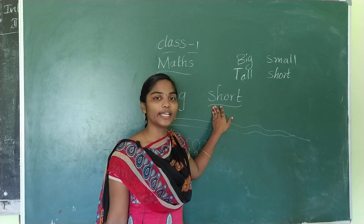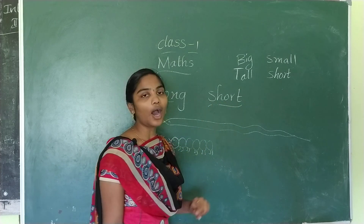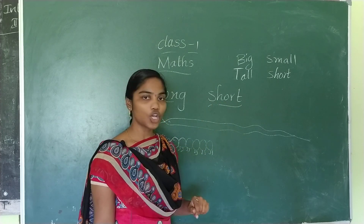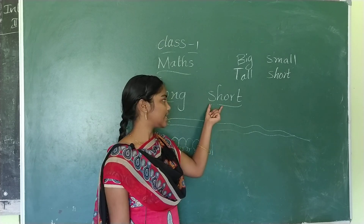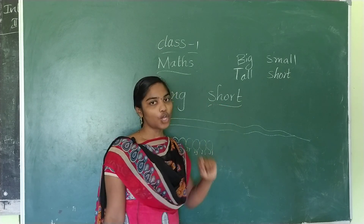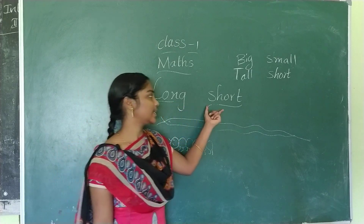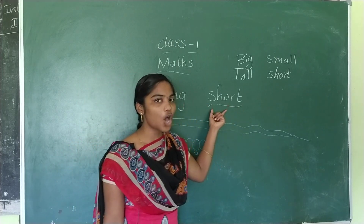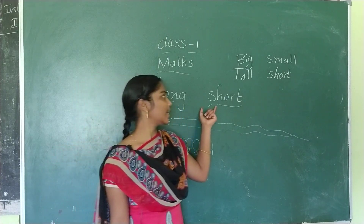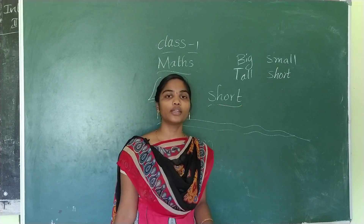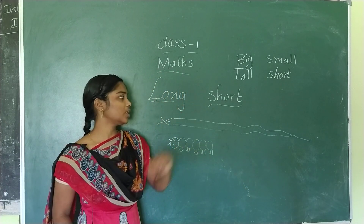Now let's spell: S-H-O-R-T, short. L-O-N-G, long. S-H-O-R-T, short. L-O-N-G, long. S-H-O-R-T, short. Long. Short.